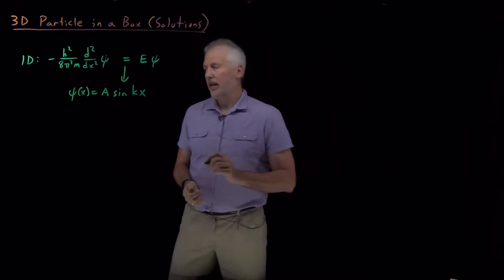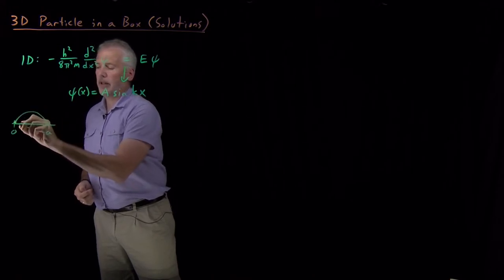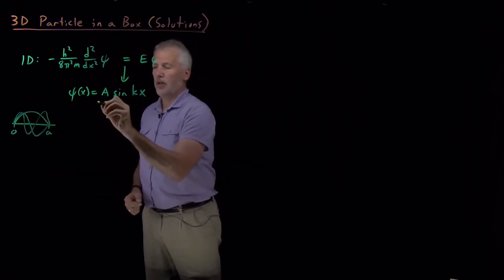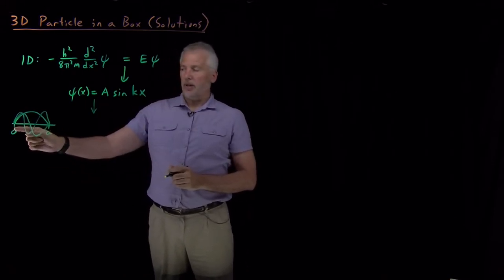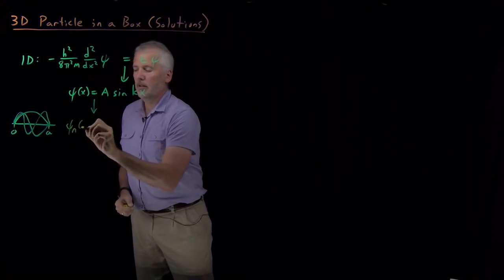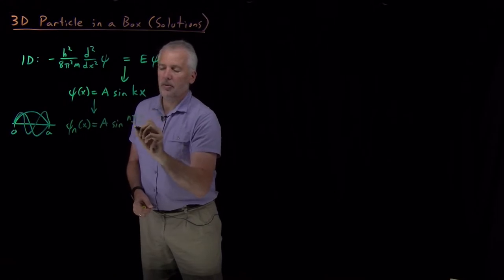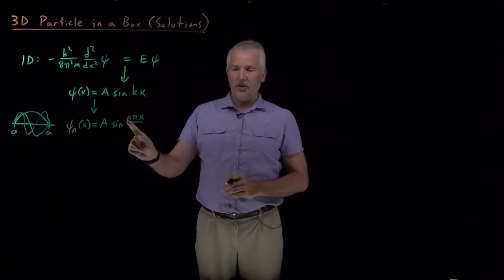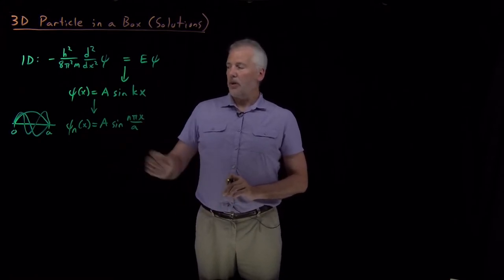With the extra caveat that we require the solutions to be zero at the edges of the box, we can only have sine waves that end at the edges of the box. Solving Schrödinger's equation with boundary conditions gives us wave functions of the form sine of an integer times πx divided by the box length — not just sine of any constant times x.